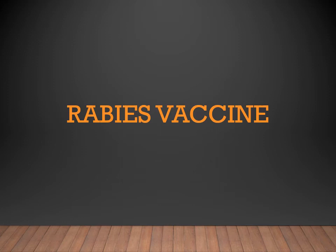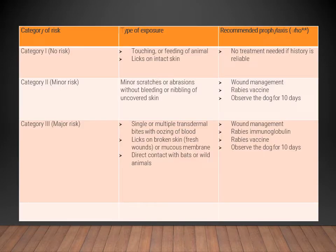Good morning friends. Today we will learn about the rabies vaccine. When giving prophylaxis, we should know what type of wound it is. Patients are divided into three categories. Category one cases are those with no risk of rabies — where there is only a history of touching or feeding the animal, or licking on intact skin. No recommended prophylaxis is needed for these.